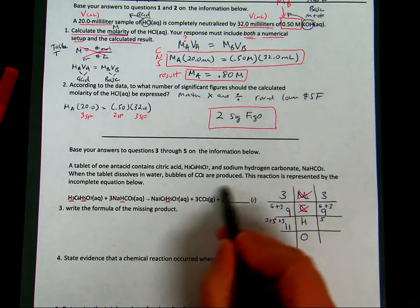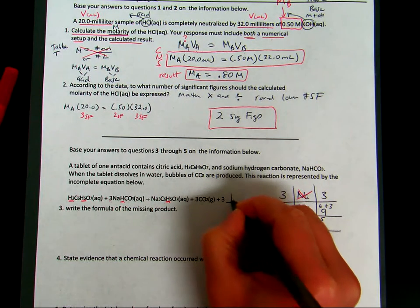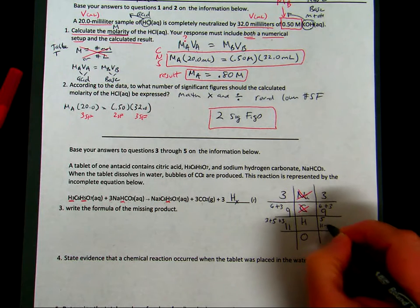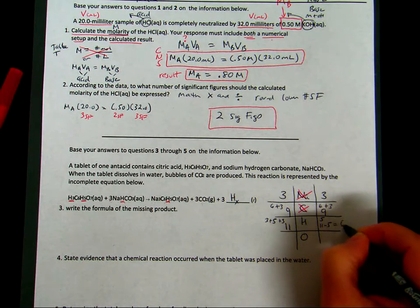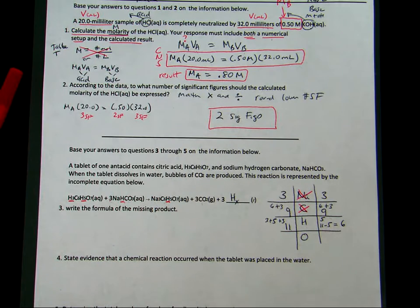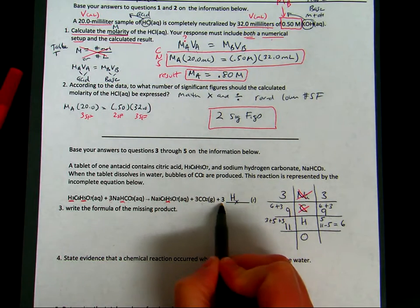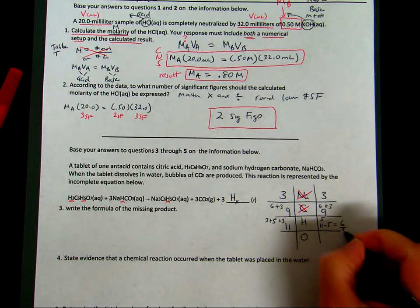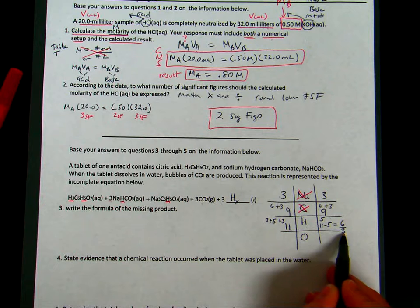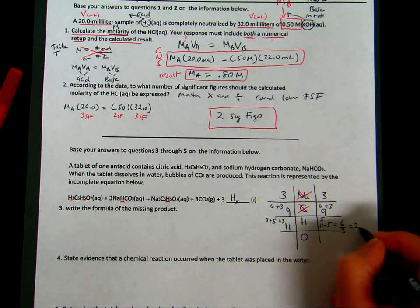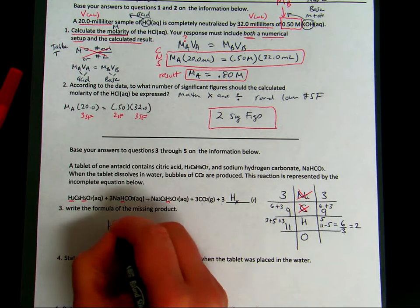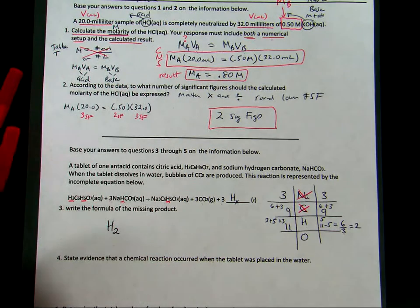So I'm going to do a little math. So 11 minus 5 means I have 6 hydrogens missing from the product side, but I notice my missing product has a subscript of 3, right? And so those 6 hydrogens have to be distributed among 3 molecules, so that means 2. So I know at least my missing product is H2.